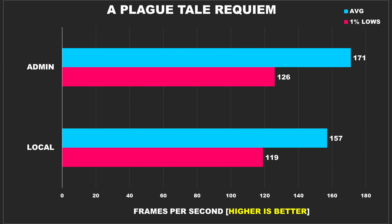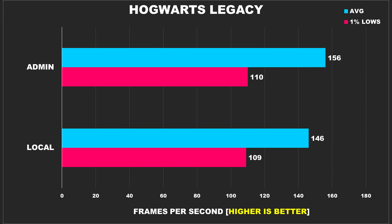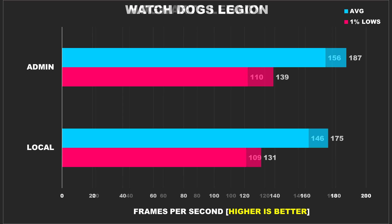A Plague Tale: Requiem shows a 9% improvement to average FPS and 6% for the 1% lows using the admin account — decent, but for a single-player title that isn't particularly fast-paced, you really don't need more than what the local account already offers. Hogwarts Legacy shows a small bump in average FPS, but the 1% lows remain the same so overall smoothness didn't really feel different. Watch Dogs: Legion gave us a 7% bump in performance with 1% lows improving by 6%.